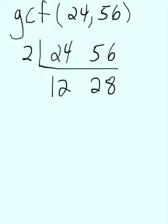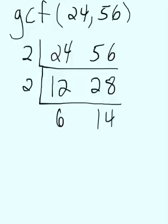Once again, they're both even. So I can divide by 2. 2 goes into 12 6 times. 2 goes into 28 14 times. And then I'm still not done because I can still divide out of both 6 and 14. They're both even again.